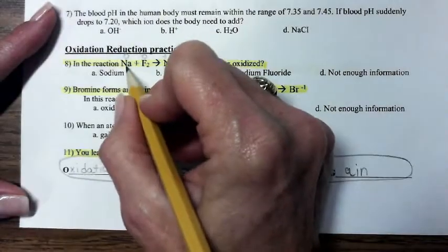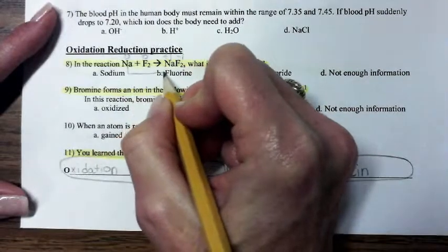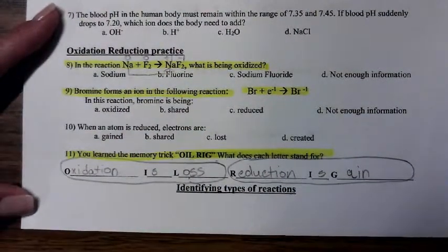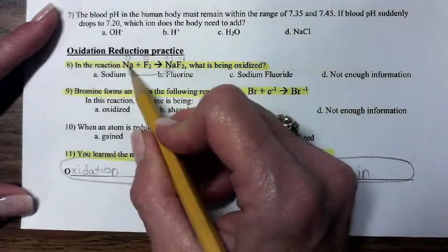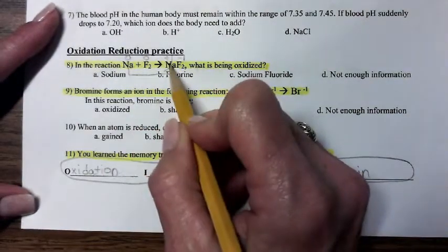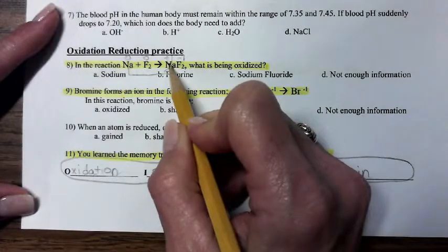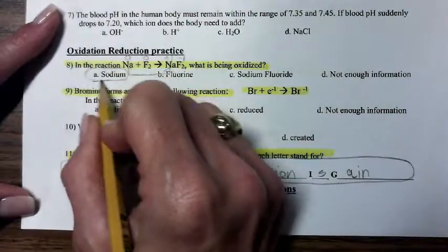Well, sodium, if it goes from a 0 to a plus 1, oh, look at that. That means that we've lost electrons. That means sodium had an electron, but now it doesn't because it's positive. It lost that negative charge. So sodium is what's being oxidized.